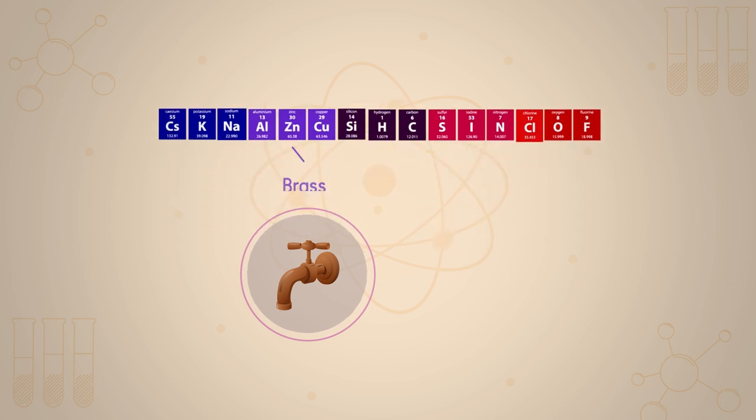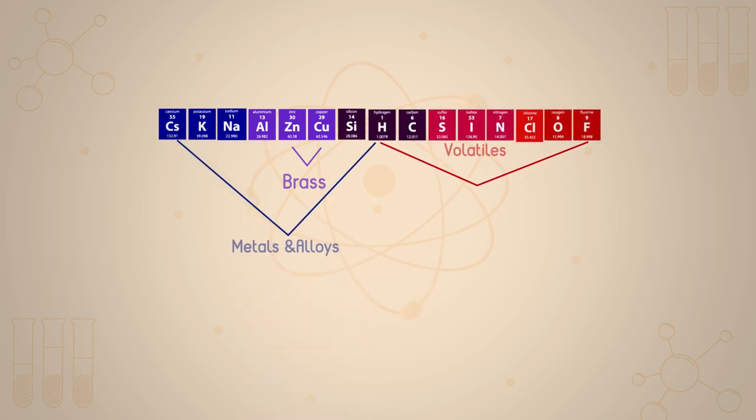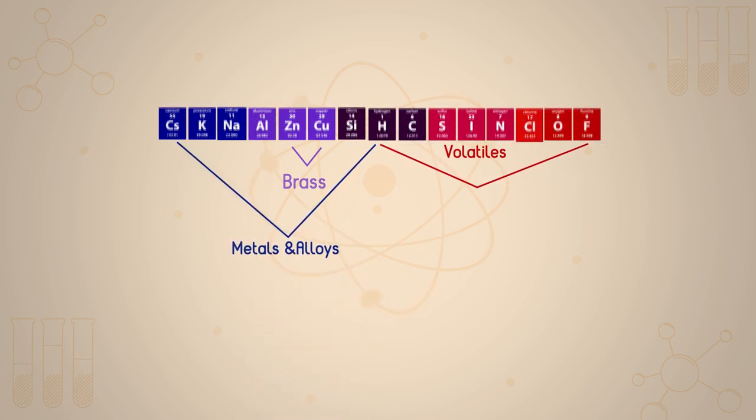Here is brass, an alloy of copper and zinc for example, retaining the metallic properties of its elements. Thus we can fill in the metallic bonding part of our structure triangle.